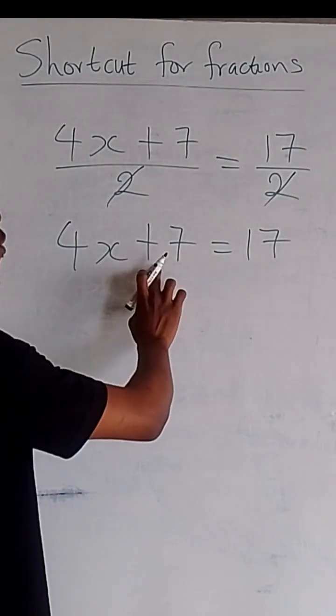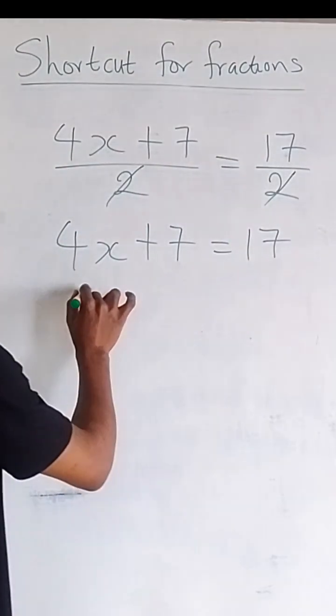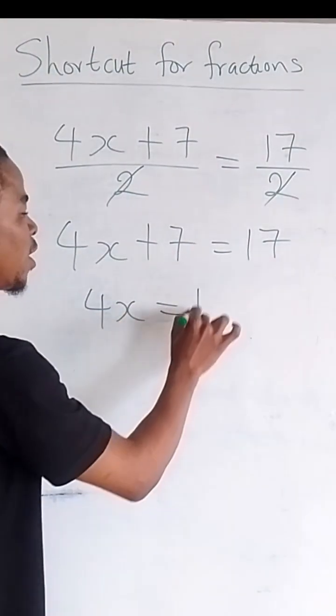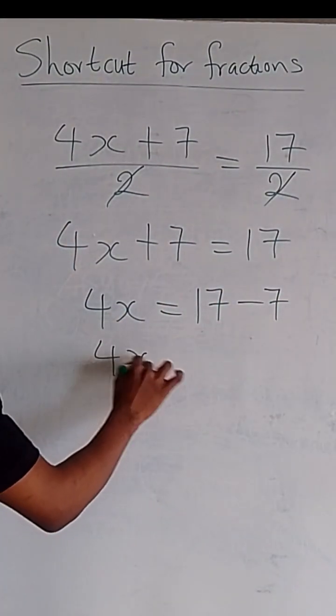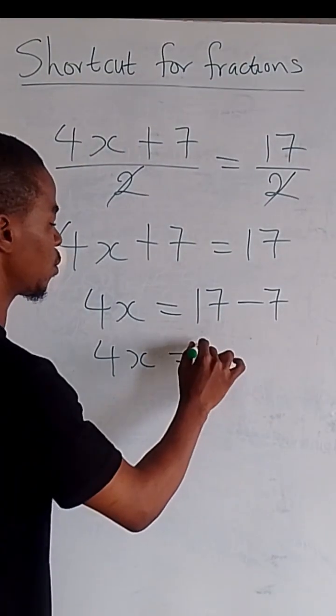At this point, you cross your 7 which is positive to the other side, it becomes negative. So we have 4x equal to 17 minus 7. So 4x equal to 17 minus 7 gives you 10.